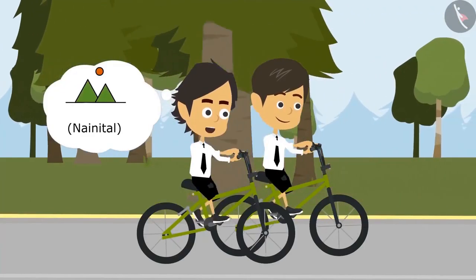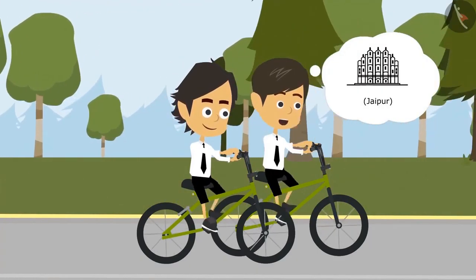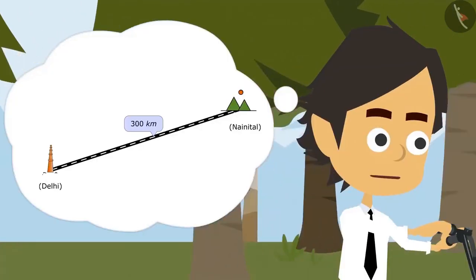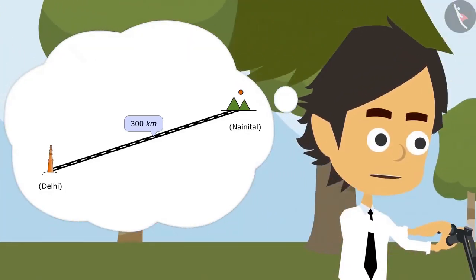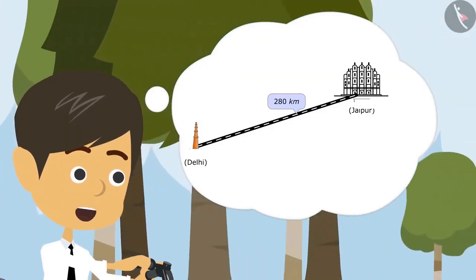I am going on a trip to Nainital. Really? And we are going to Jaipur. Nainital is 300 kilometres away from here. Is that so? And Jaipur is 280 kilometres away.